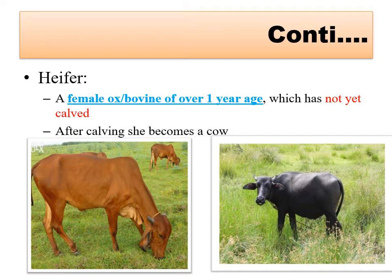Heifer is a very important class in cattle and buffalo. It is a female bovine over one year of age which has not yet calved. After calving she becomes a cow or buffalo. So a female animal from one year of age up to the first time it gives birth to a young one is called a heifer.